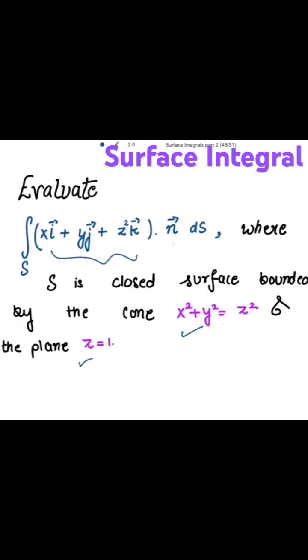The integrand is the product of this and n vector. That means we can use here the Gauss's Divergence Theorem, right?